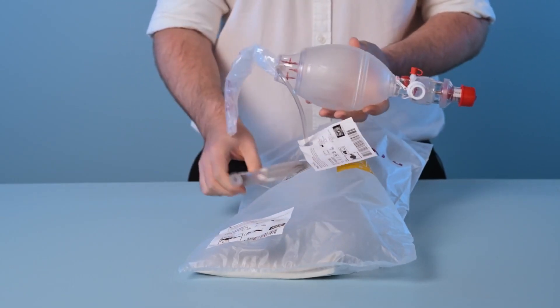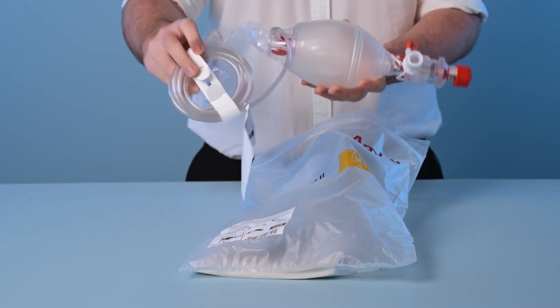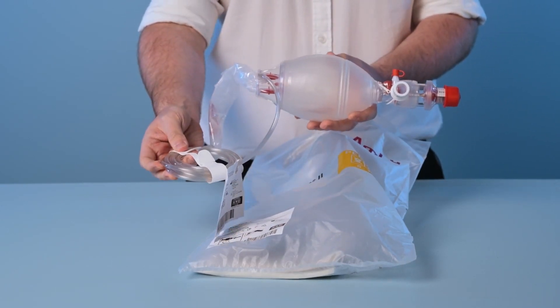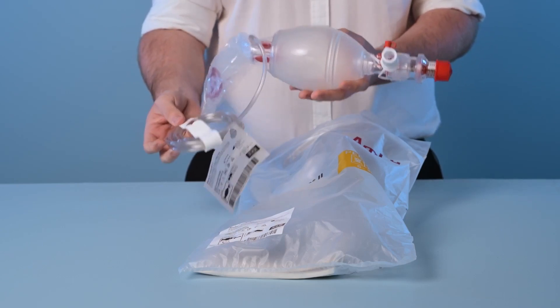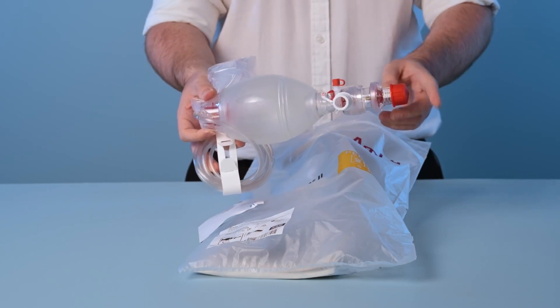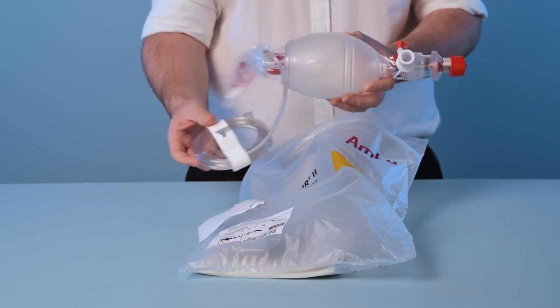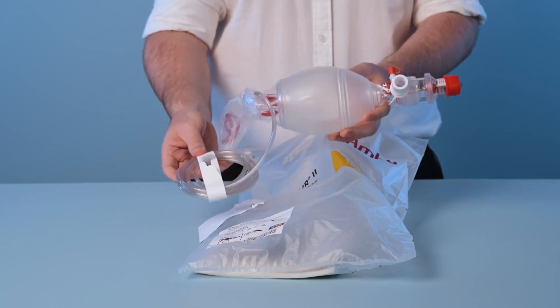In this kit we have a pediatric Spur2 resuscitator that comes with a pre-attached oxygen tube. This is standard to all Spur2 products. There is also a pre-attached peep valve. The oxygen tubing band and tag should always be removed prior to using the product.